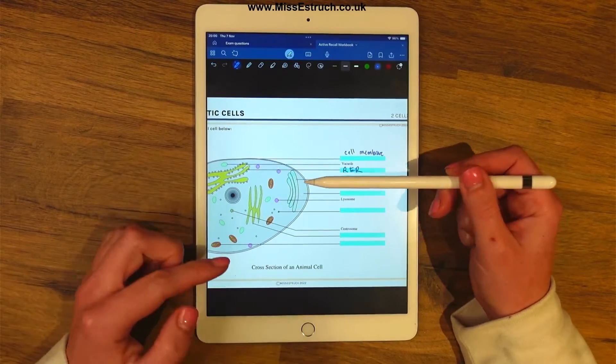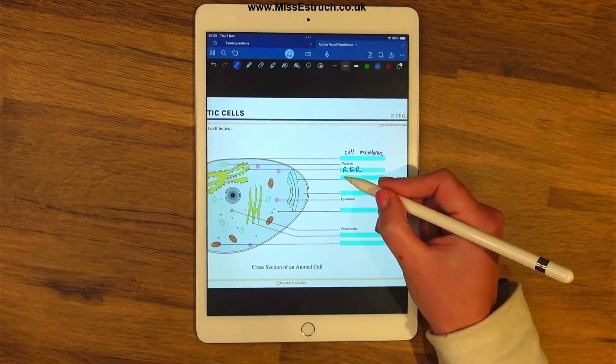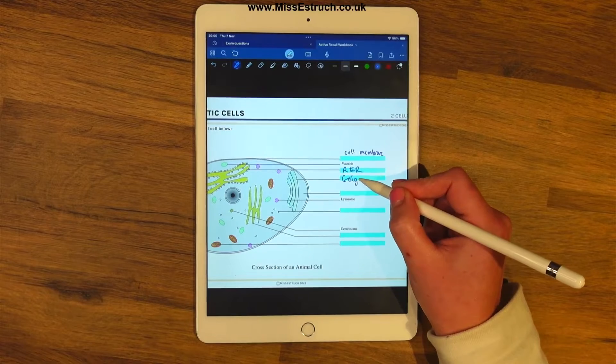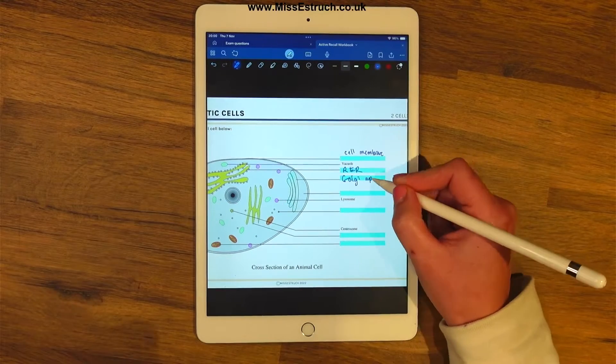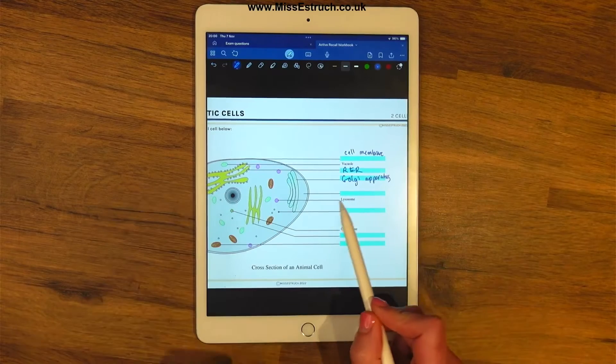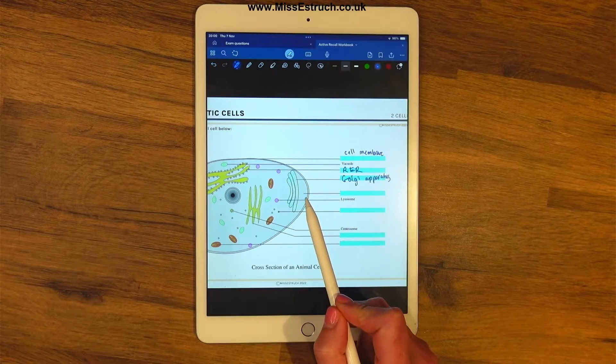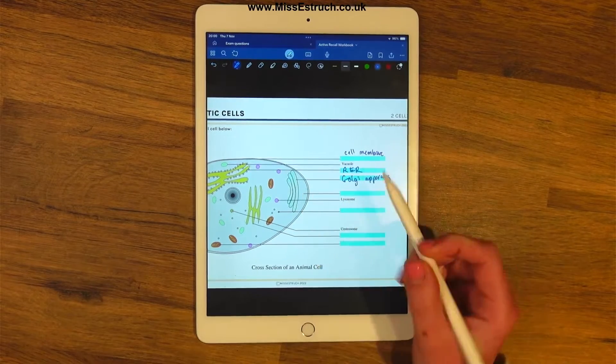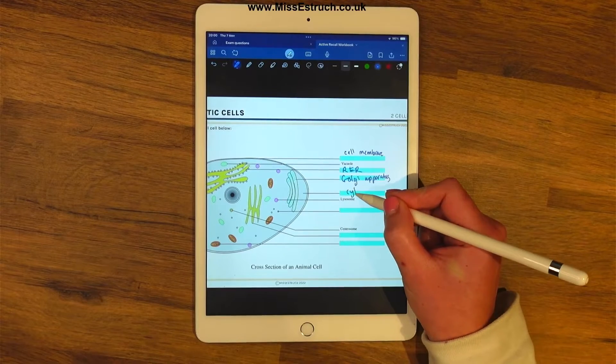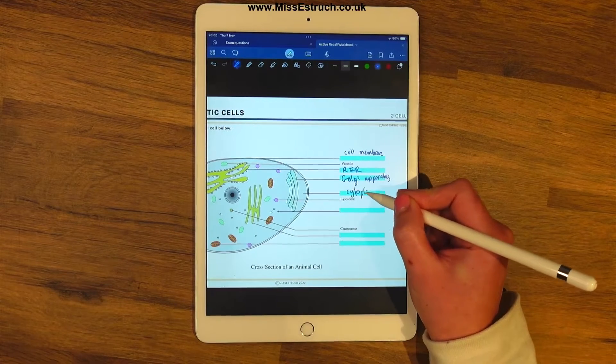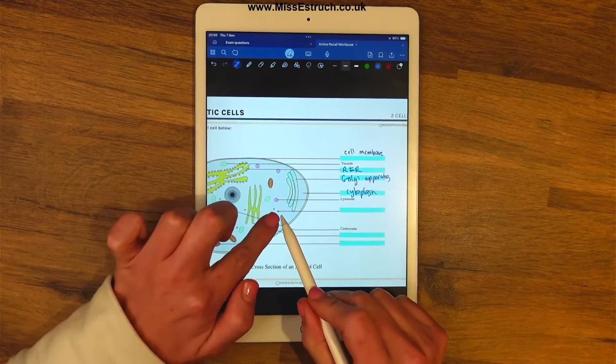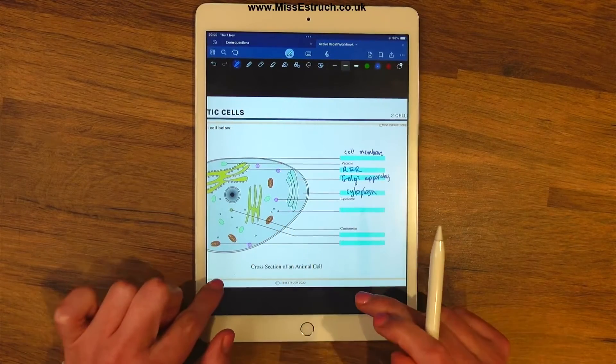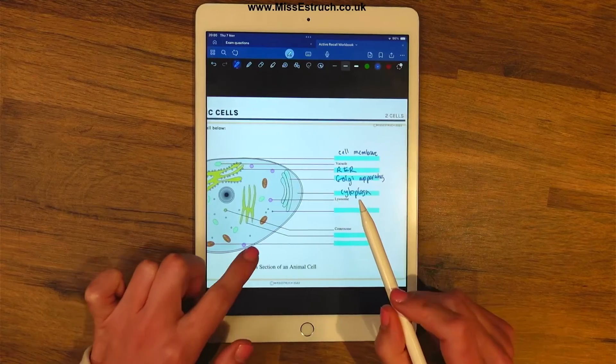Then we've got this one here. This next one is the golgi apparatus, or as people say to me it looks like a wifi symbol, which I totally see now. Then this one, oh nice easy one over here, we've got this one labeling into the cytoplasm.